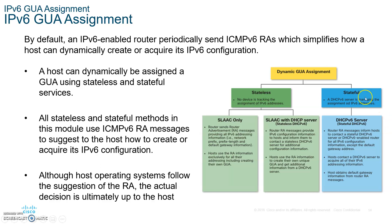For dynamic GUA assignments, you can either do stateless or stateful. Stateless means no device is tracking the assignment of IPv6 addressing — nobody keeps track of what they're giving you. Stateful means the DHCPv6 server is managing the assignment of IPv6 addresses. If you're going stateless, you can do SLAAC only or SLAAC with DHCPv6. If you're going stateful, you use a DHCPv6 server.